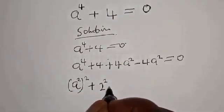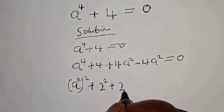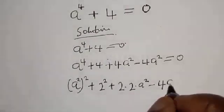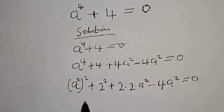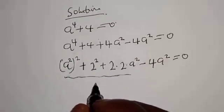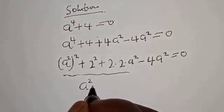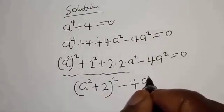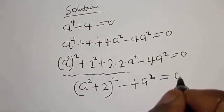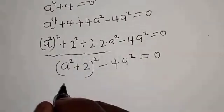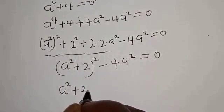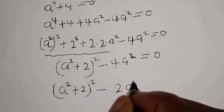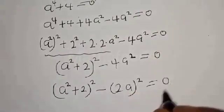Then we can express a⁴ plus 4a squared plus 4 as (a² + 2)², and 4a squared as (2a)². So we have (a² + 2)² minus (2a)² equal to 0. This is a difference of two squares.